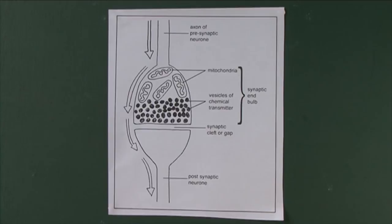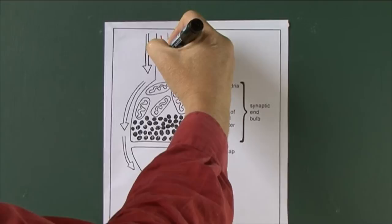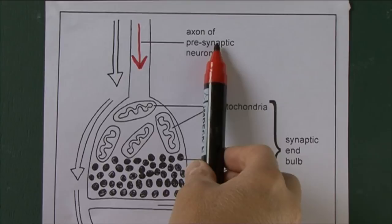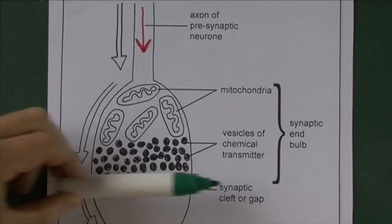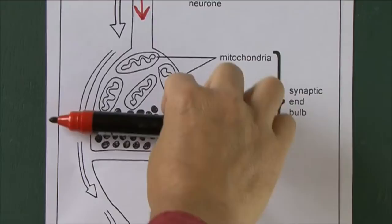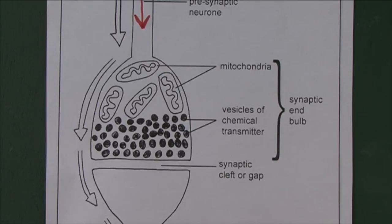We've seen that when a nerve impulse is travelling it's electrical in nature. Here we have the axon of a presynaptic neuron. The synapse is actually the physical gap between two neurons — any two nerve fibres don't touch; there's a physical gap. The reason for this gap is that we want the impulse to travel from the presynaptic to the postsynaptic side, but not from the postsynaptic back to the presynaptic.